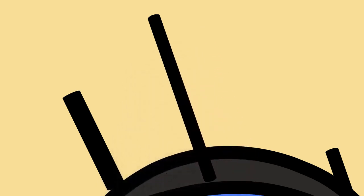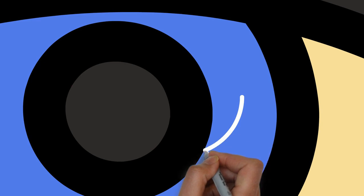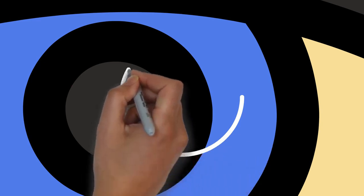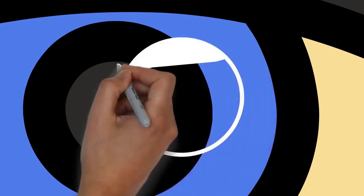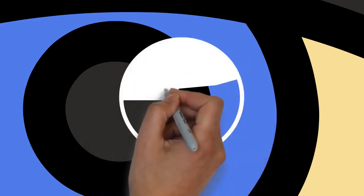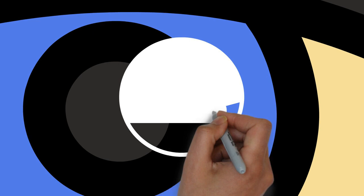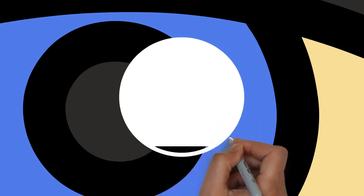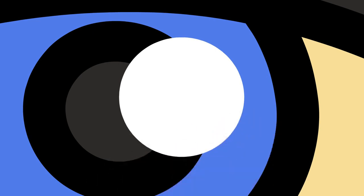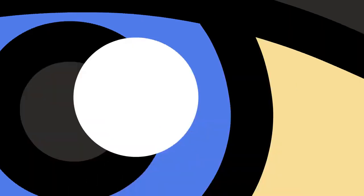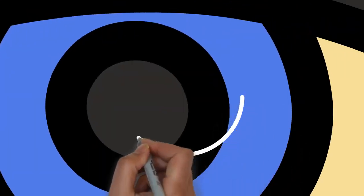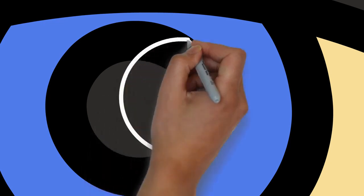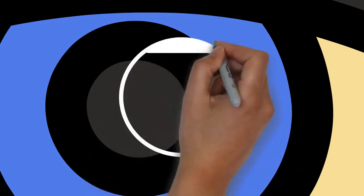Then another lens, the crystalline lens, that accomplishes the remaining focusing of light into images, and finally a light-sensitive part of the eye, the retina, where the images fall and are processed. The retina makes a connection to the brain via the optic nerve.